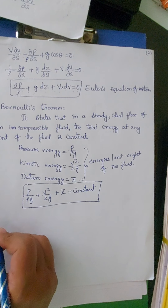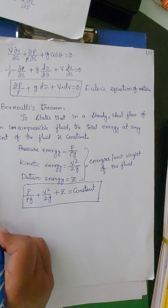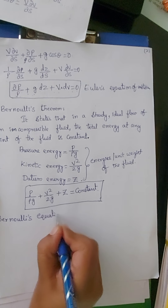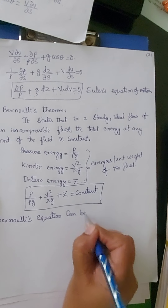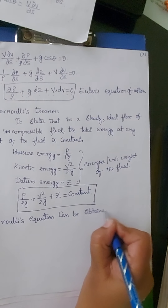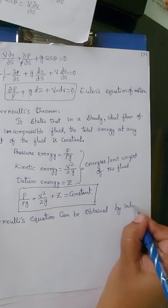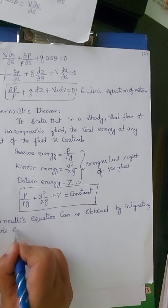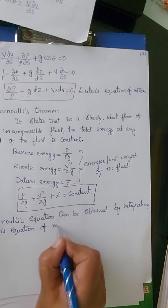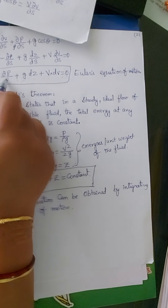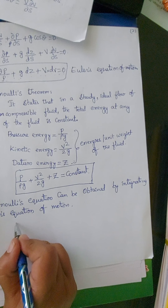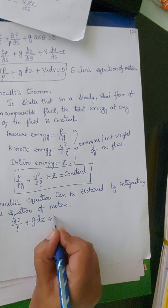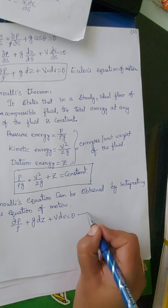Bernoulli's equation can be obtained by integrating Euler's equation of motion. Euler's equation of motion is: dP divided by rho, plus G times dz, plus V times dV equals zero. This is Euler's equation.